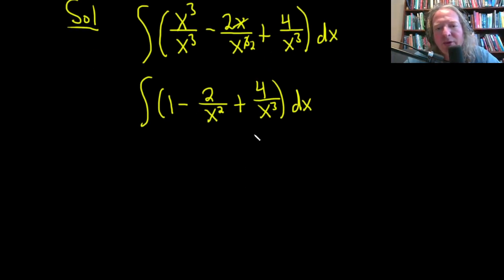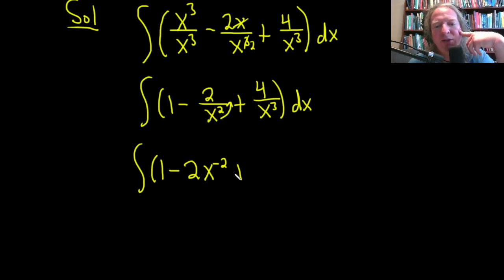So in order to do this, we have to write it in a way that is doable. We have to write everything as x to a power so we can apply the power rule. The one's okay, we can take this and bring it upstairs. So this will be minus 2x to the negative 2, because it becomes negative when you bring it up. And then plus 4x to the negative 3 like that, and then dx.